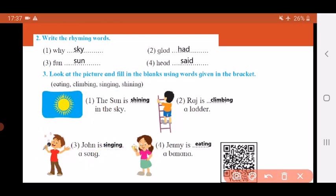And the last one. This girl here has a banana in her hand. Jenny is dash a banana. The blank will be eating. So my sentence becomes: Jenny is eating a banana.